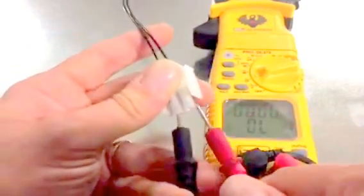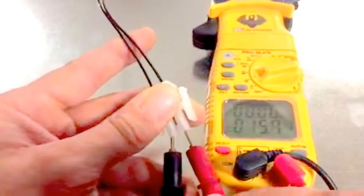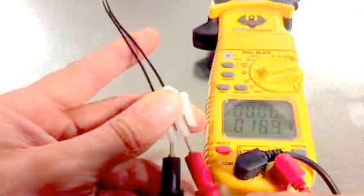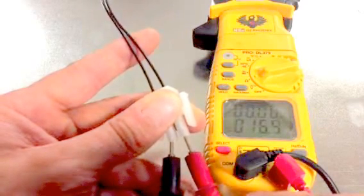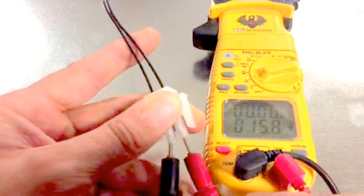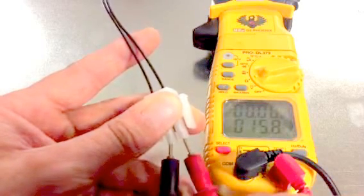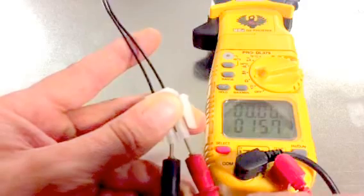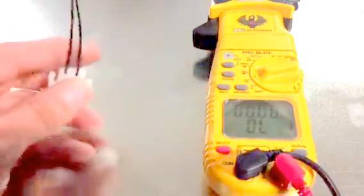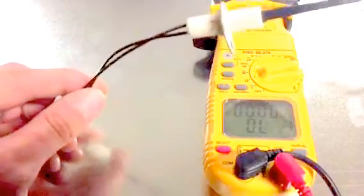Like that, you can see we're reading 15.7. Let it stabilize here. I think I lost connection there for a second. Okay, 15.8, where we're kind of stabilized there close to it. Now these should read somewhere between 11 to 18 ohms new.